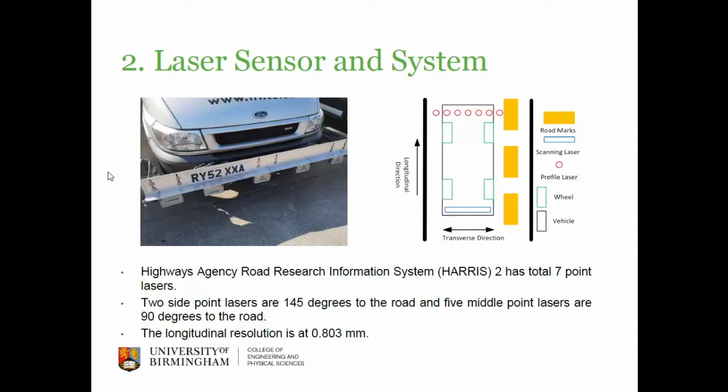We have built a vehicle which has seven sensors in the front of the vehicle — in this picture there are only five. They are 90 degrees towards the ground, and there are two more on the outside of the vehicle at 135 degrees to the ground. The resolution of this point laser is 0.803 mm, which is very small, and it gives a really good resolution to detect all those kinds of road markings and features.